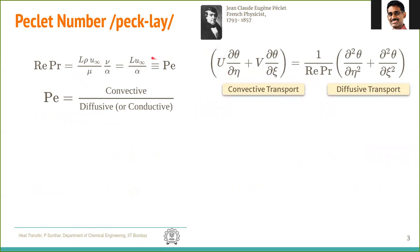The second number is the Péclet number, named after French physicist Eugène Péclet. When we derive the dimensionless energy conservation equation, we get convective transport terms on the left-hand side and diffusive transport multiplied by 1/(Re·Pr) on the right. Expanding Re·Pr as (L·ρ·u∞/μ)·(ν/α) gives L·u∞/α, and this product is the Péclet number.